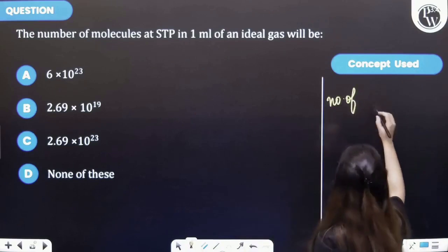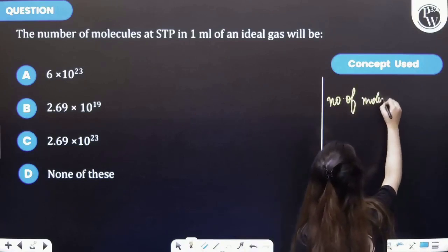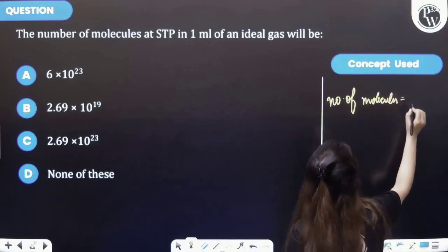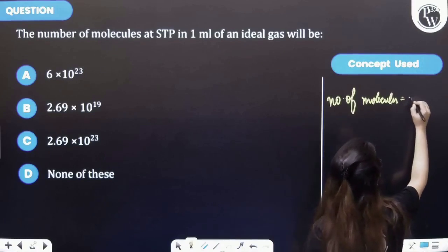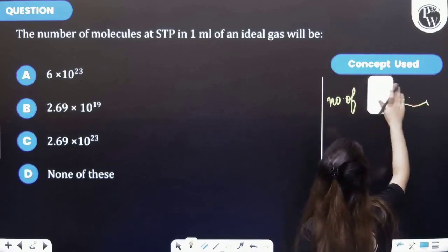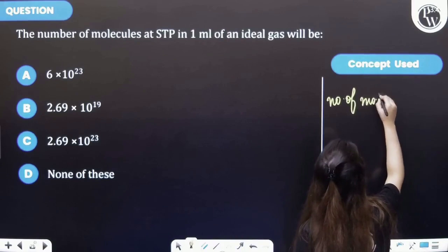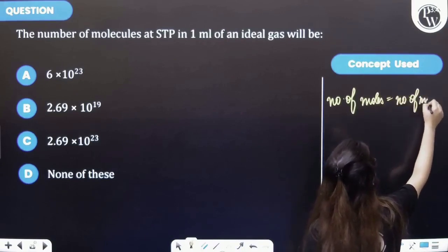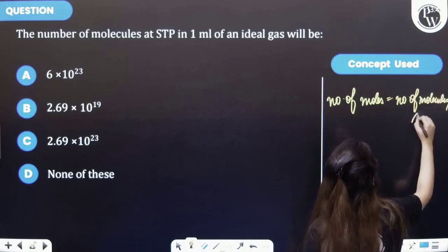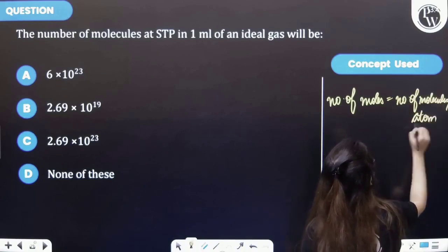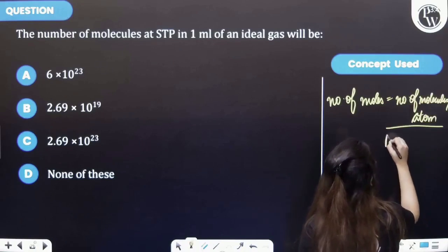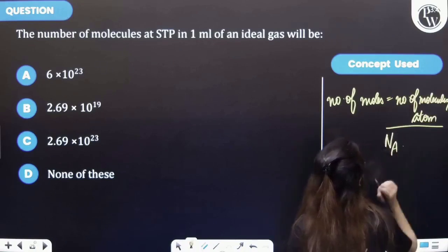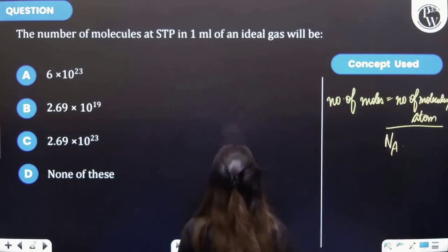Number of molecules is equal to, or the number of moles is equal to number of molecules or atoms divided by Avogadro's number. Right?